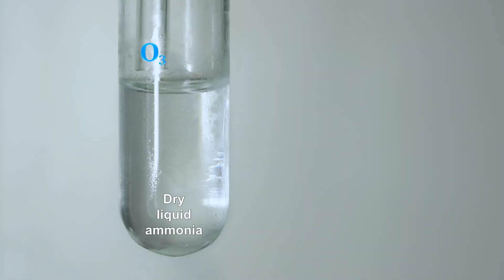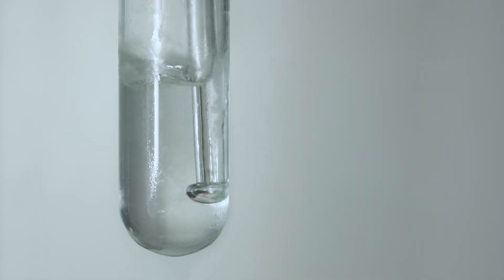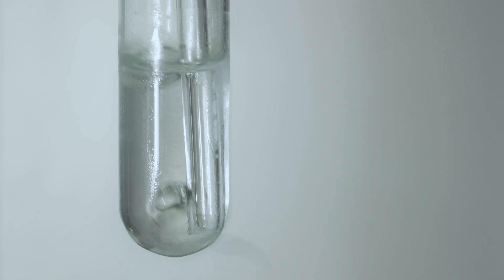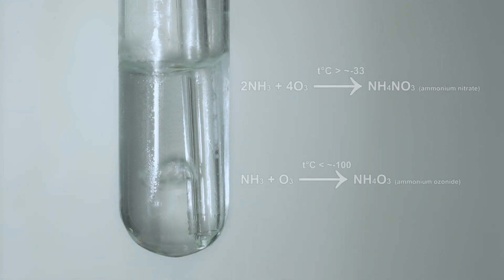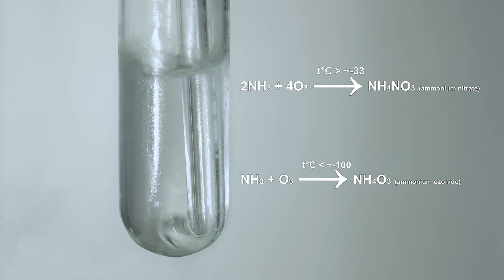If we bubble ozone through liquid ammonia with a temperature a little bit lower than minus 30 degrees Celsius, we will see no changes. Because liquid ammonia reacts with ozone either at higher temperatures, forming mainly ammonium nitrate, or at lower temperatures, forming bright red ammonium ozonide.